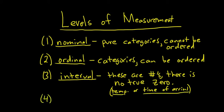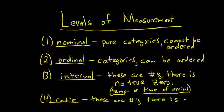The last level of measurement is ratio. These are also numbers, just like interval, except in this case there is a true zero — zero is the starting point for these numbers. For example, cost of a house: it might not be zero, but zero is the smallest it could be. So any type of cost would be ratio.